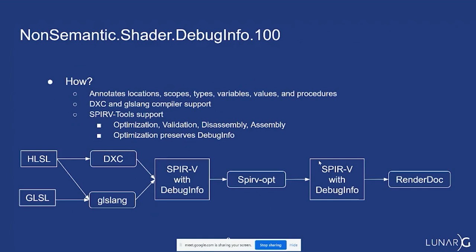These instructions are supported and generated by the toolchain. Both DXC and glslang will now generate these instructions. The SPIR-V will quite often go through the optimizer and then finally into RenderDoc.